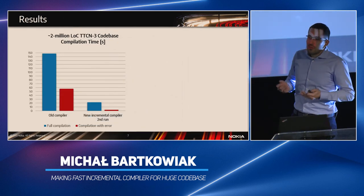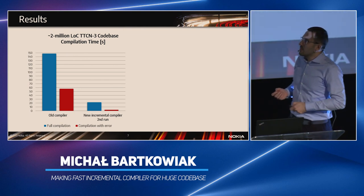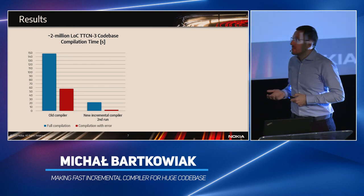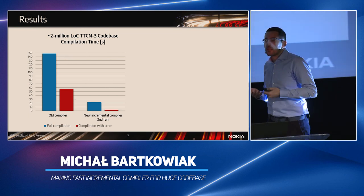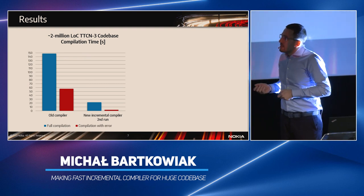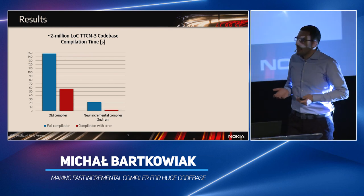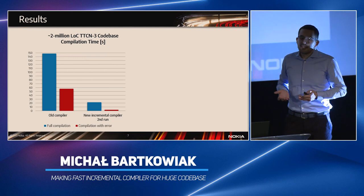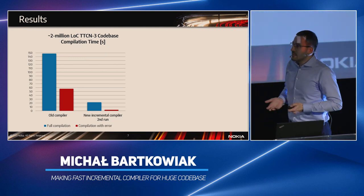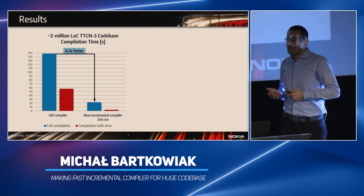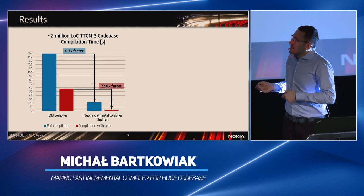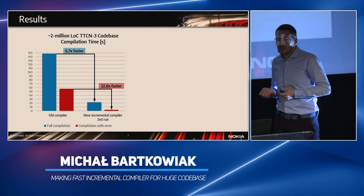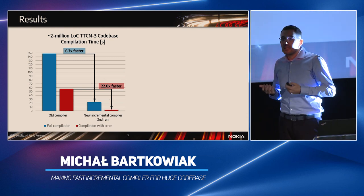What are our results, before I dive into the technical details? The old compiler was able to compile the whole code base in over two minutes, and our new incremental compiler is able to do this in around 20 seconds. In case there is an error in the code — a very typical case in daily work — the old compiler usually took one minute to tell us there is an error in the TTCN3 code. With our new incremental compiler, this feedback is instant — only a couple of seconds. We made the full compilation almost seven times faster, and the incremental compilation in case of an error is almost 23 times faster. As a consequence, features can be developed in shorter time, bugs are easier to correct, and Nokia spends less on R&D costs.